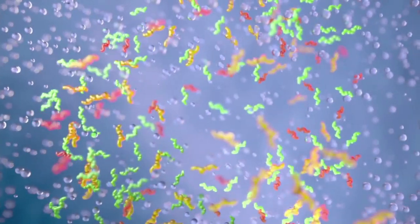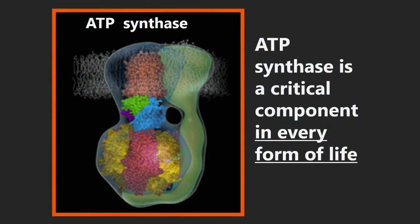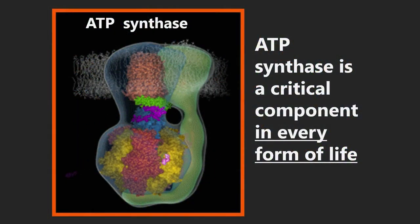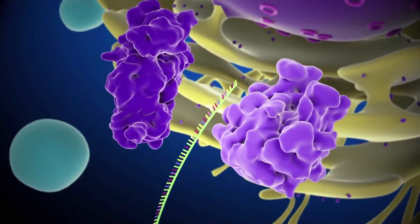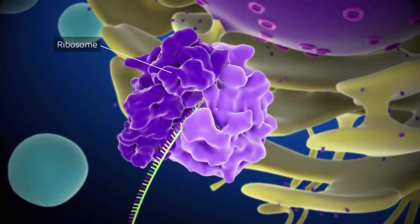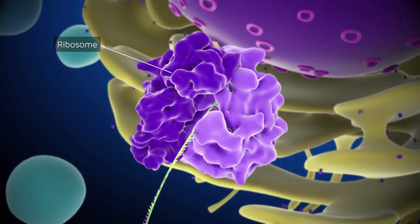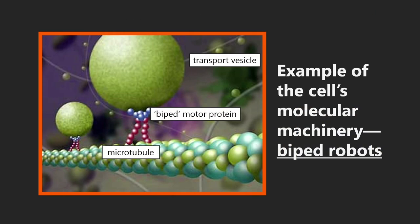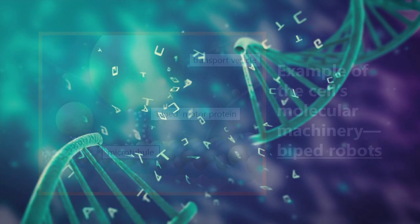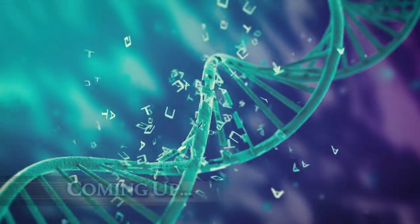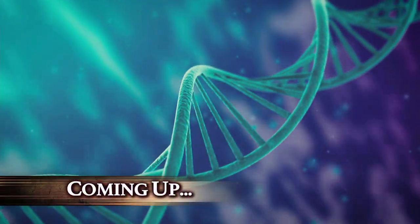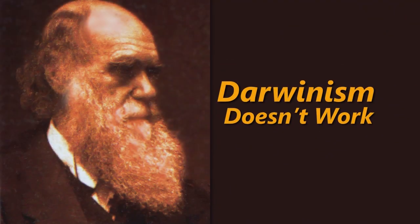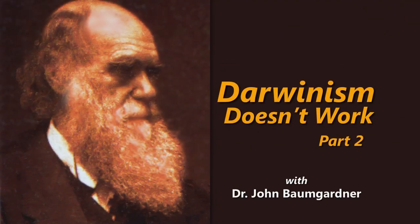We have found that there is stupendous complexity of all living systems, confirmed by tiny molecular machines seen in every form of life. Today's program will show that the precise specifications by which they are manufactured belong to a non-material category of reality. For that basic reason, these machines cannot be explained by any naturalistic process — coming up on today's edition of Origins: Darwinism Doesn't Work, Part 2, with Dr. John Baumgartner.